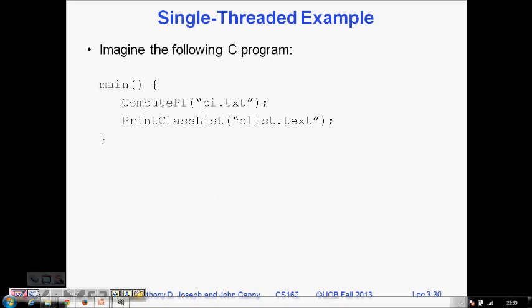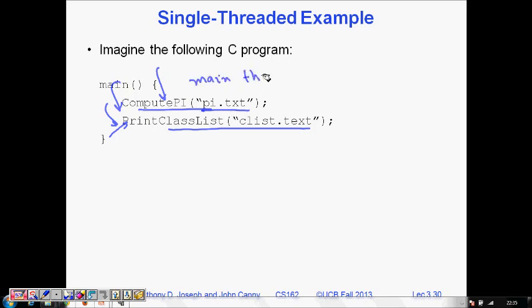For example, if we take computing pi, there is a function. Pi is a non-recurring decimal, an irrational number, so it will continuously generate numbers—it's kind of an infinite function. Print class list is something finite you can print. But if you call these two functions, one infinite function along with other finite function, this function will never be called because your execution is stuck here.